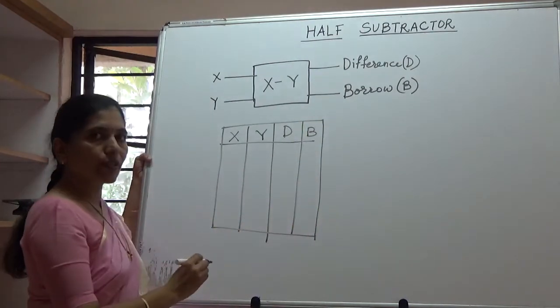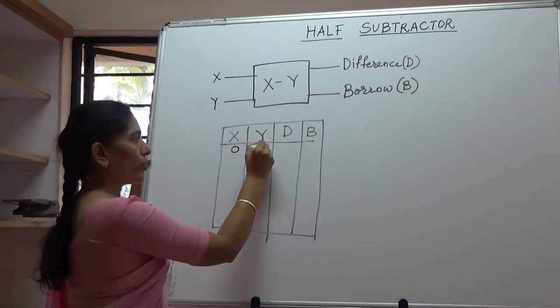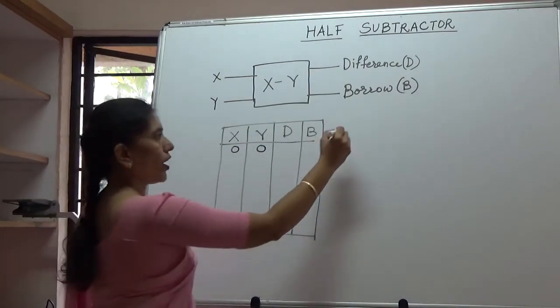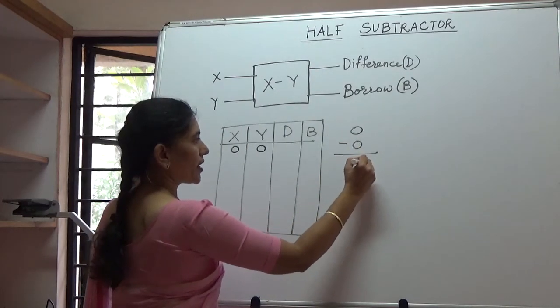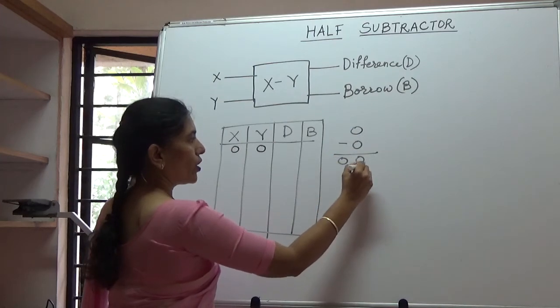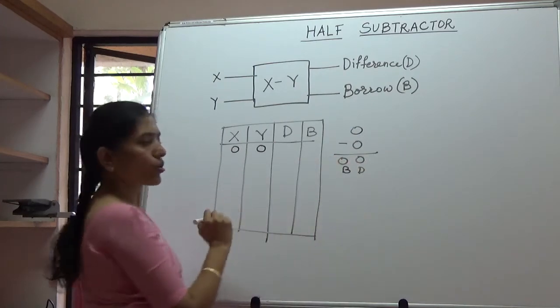Let's start with the first combination of X and Y that is 0, 0. If a 0 is subtracted from a 0, obviously the difference is 0, the borrow is 0, so both the outputs will be 0.